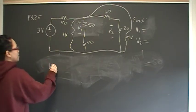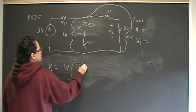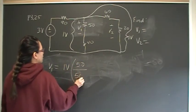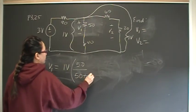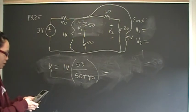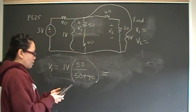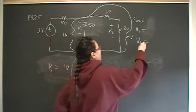Find it. V1 is going to be 1 volt times 50 over 50 plus 40. And that will give you 556 millivolts.